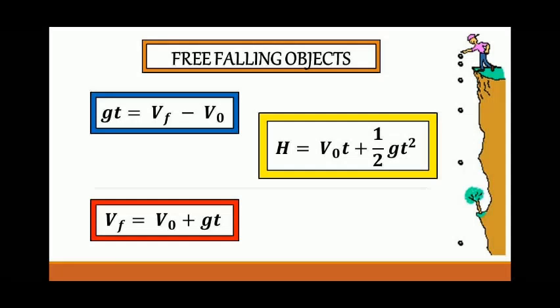So we have the formulas for free-fall motion: g times t is equal to v sub f minus v sub o; height h is equal to initial velocity times time plus one-half g t squared; and final velocity is equal to initial velocity plus gravity times time.